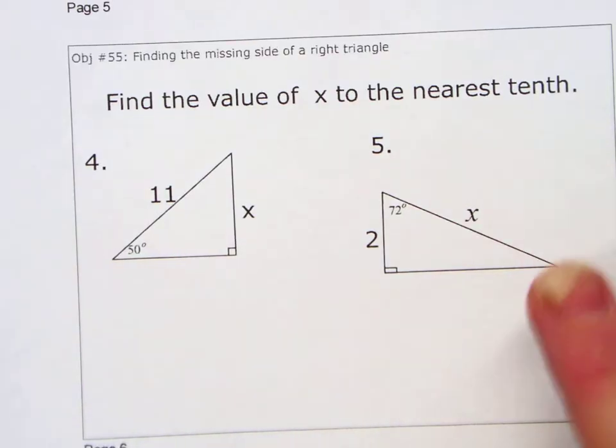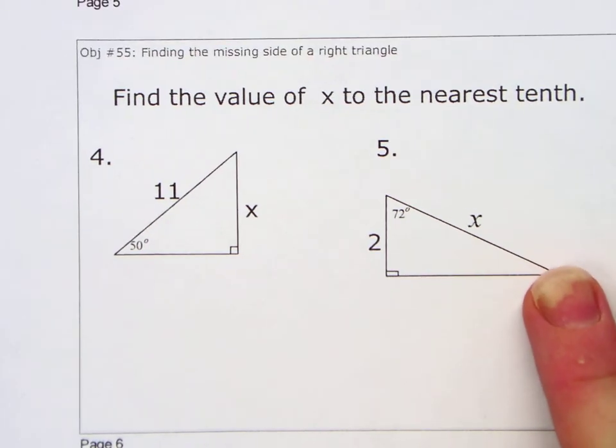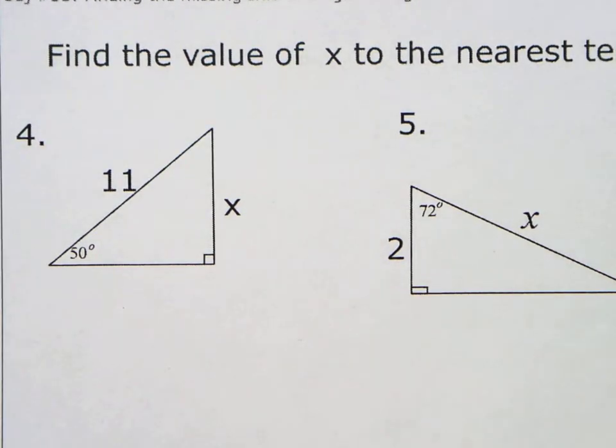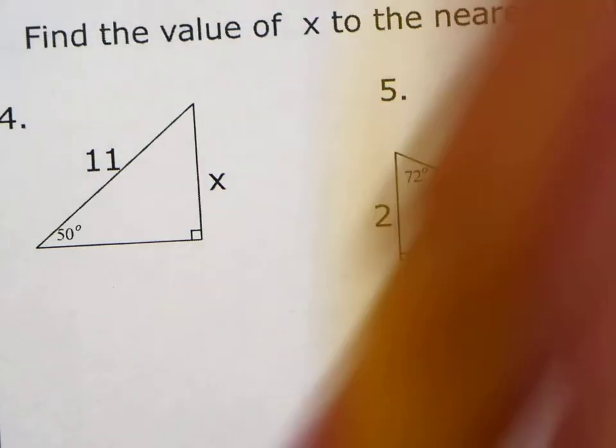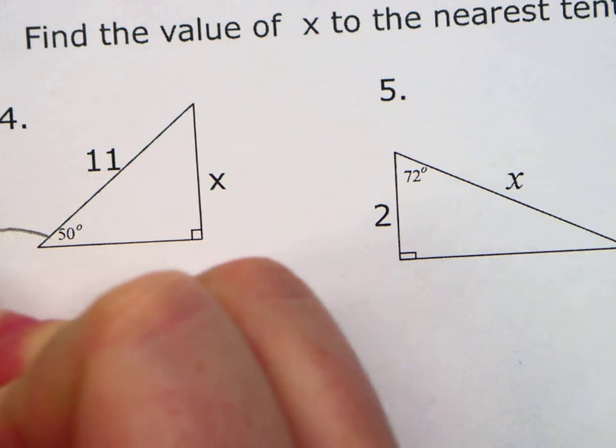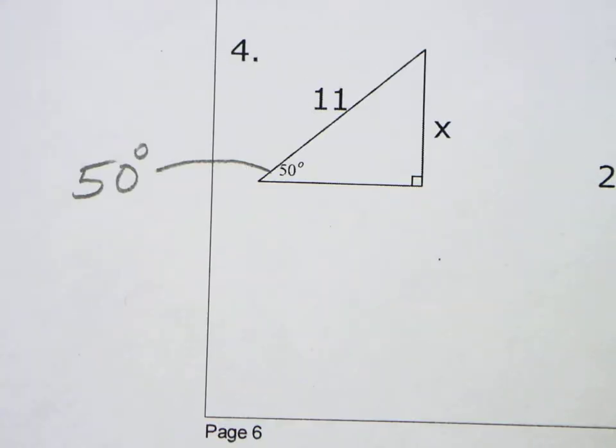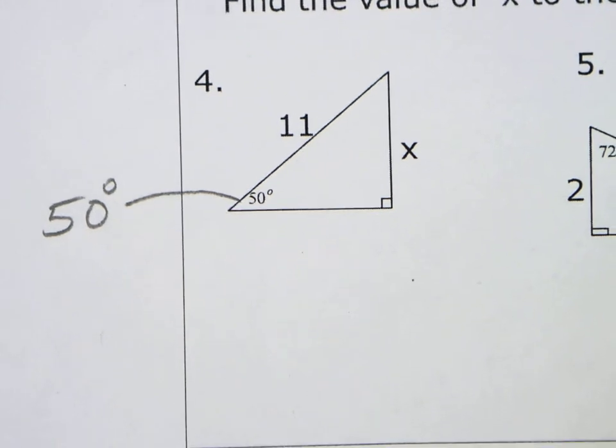All right, number 4. All right, we got to figure out, can you see that? Let me zoom in a little. That's 30 degrees. Okay. That's a, no, that's not. That's a, I can't even read it on the screen. That's a 50, FYI. I'll write it over here. That's a 50 degrees. All right, so let's label. Which sides do we have?